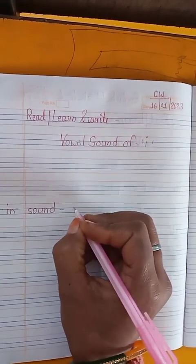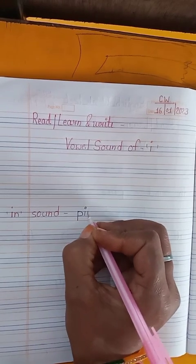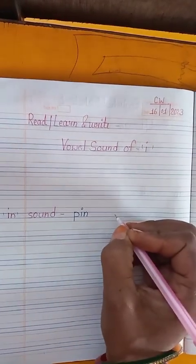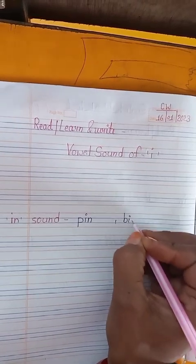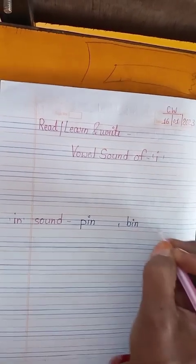S-O-U-N-D, in sound, in sound. We write karenge: P-I-N pin, B-I-N bin, W-I-N win.